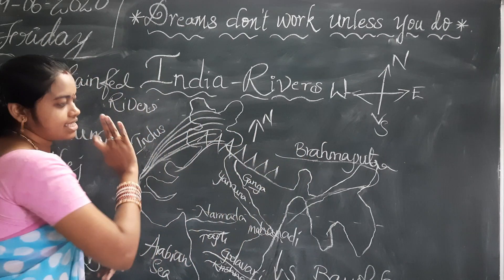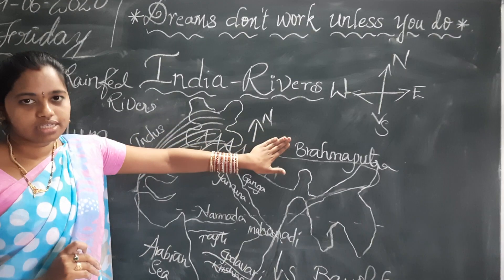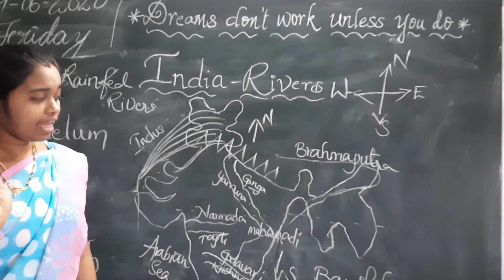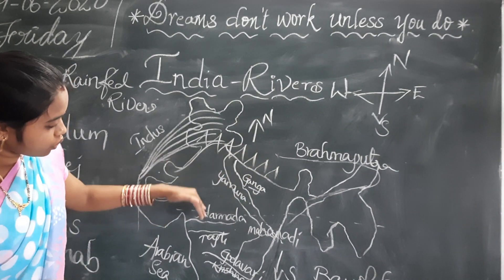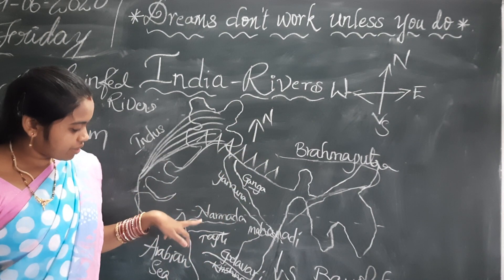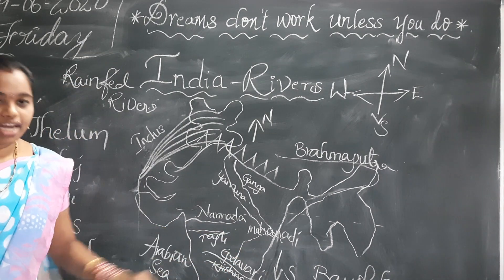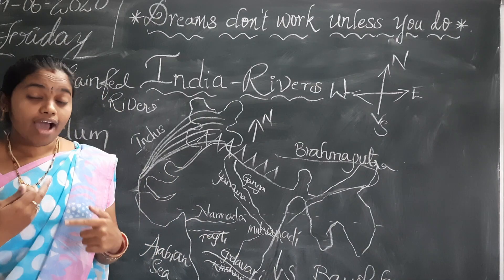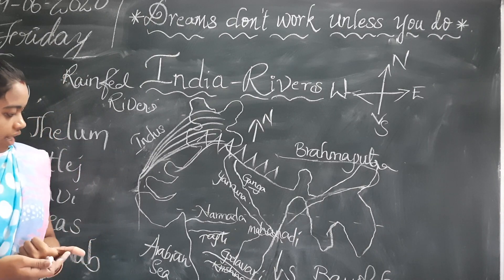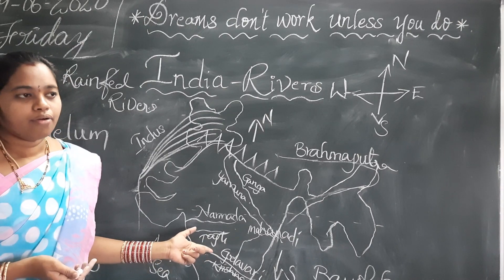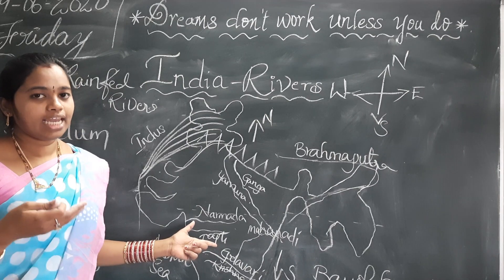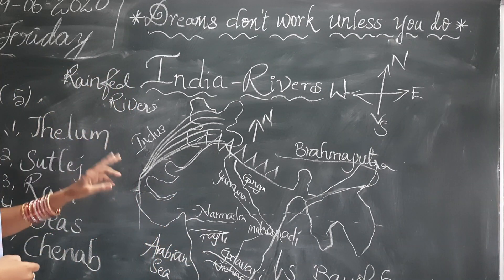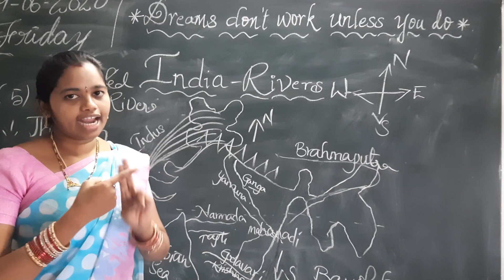Ganga, Yamuna, Brahmaputra, and Indus — these rivers are called snowfed rivers. Snowfed rivers means the water remains the same throughout the year. Coming to central and south India rivers: Narmada, Tapti, Godavari, Krishna, Kaveri, and Mahanadi — these rivers are depending on rainwater. When we have more rain, we will see more water in these rivers. Unfortunately, if there is less rain, we will see very little water in these rivers. So we have two kinds of rivers: snowfed rivers and rainfed rivers.